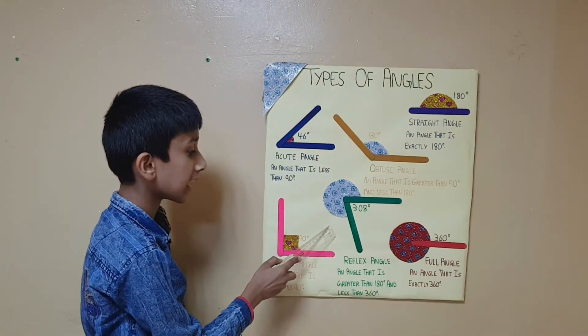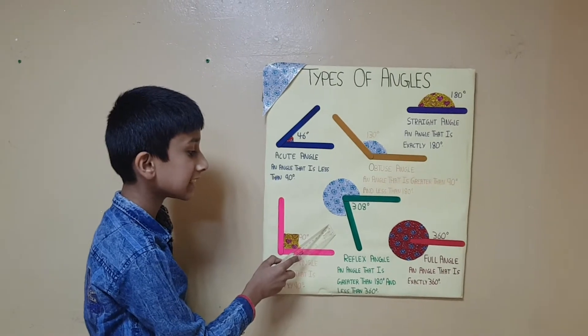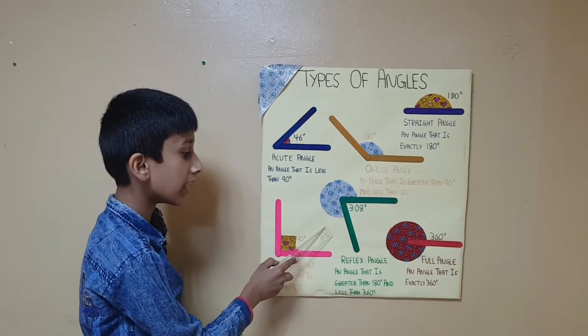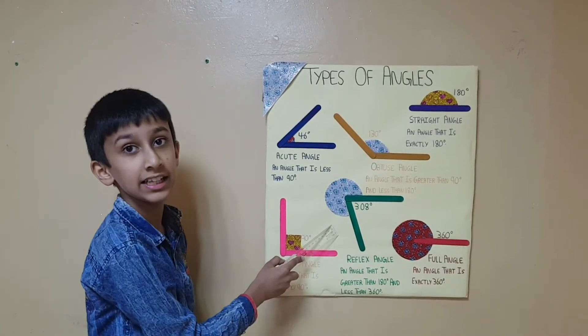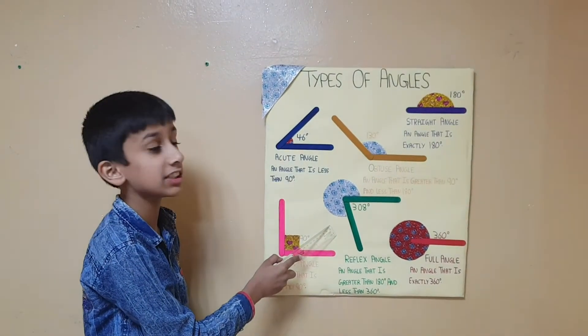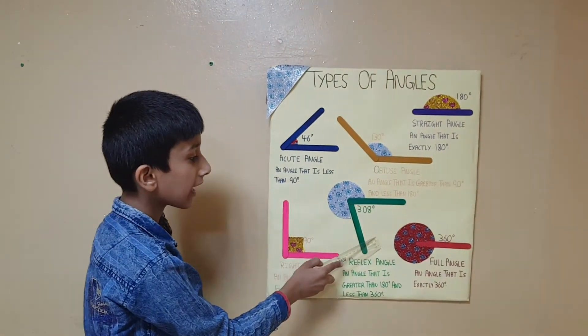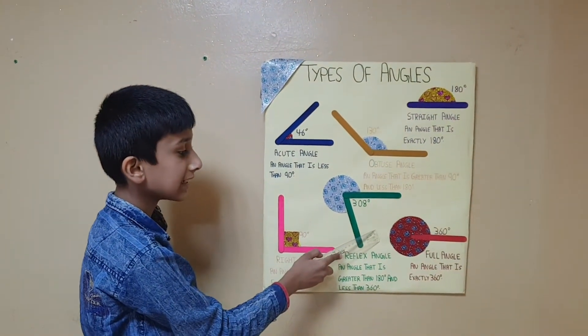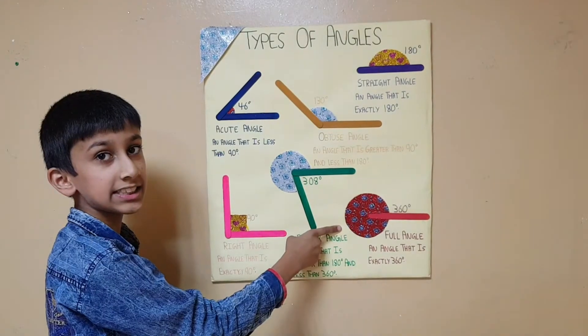Reflex angle: an angle that is greater than 180 degrees and less than 360 degrees. Full angle: an angle that is exactly 360 degrees.